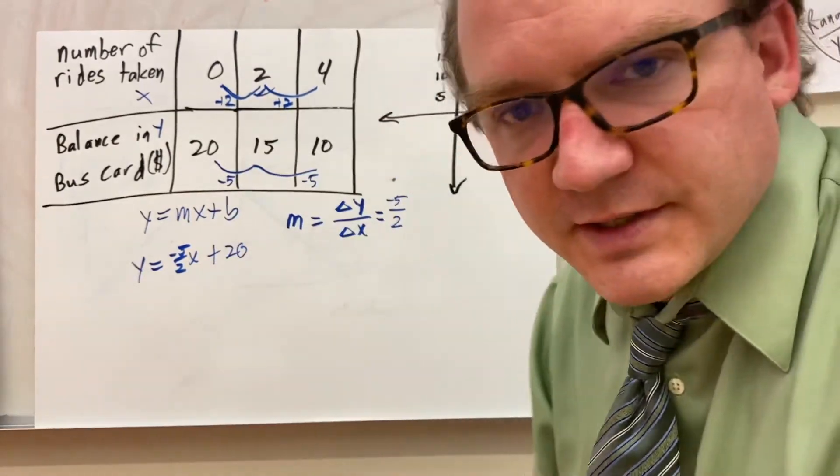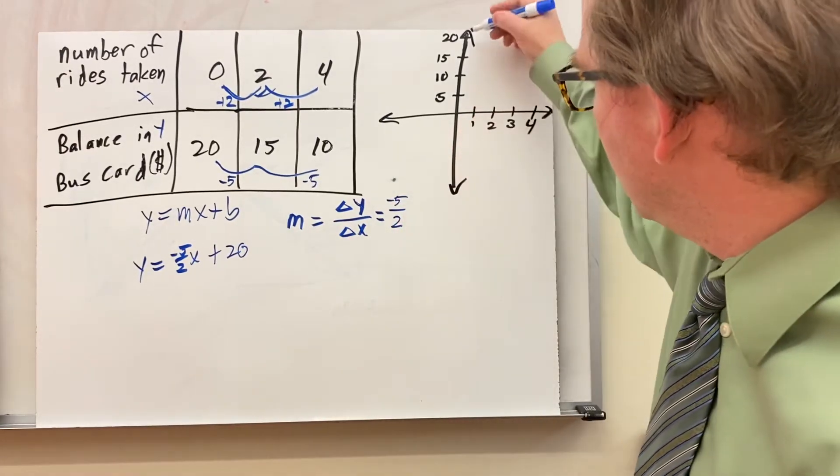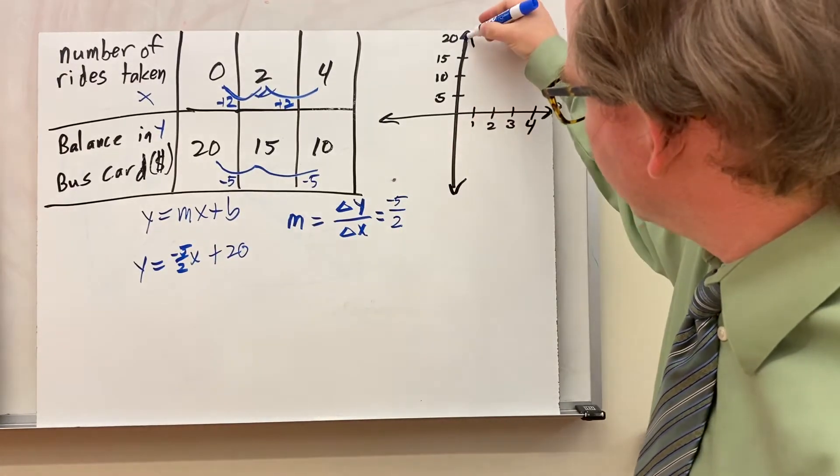I can now graph this using the same method I did with the other one. I take my y-intercept. I come to my graph. I go up to 20 because it's positive in this case.